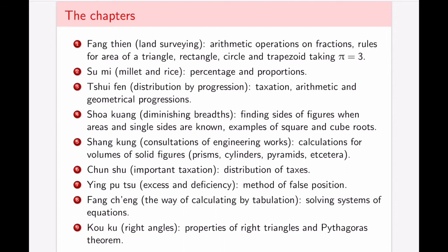So we already see some very deep mathematics being developed here. The next one, consultation of engineering works, solid figures in their volumes, important taxation, so general distribution of taxes. Chapter seven contains method of false position that was not actually found in Europe until the 13th century. So almost like a millennia later. And in chapter eight, where we have solving systems of equations, this contains methods that are identical to Gaussian elimination method. Now, this is much before Gauss that lived in 1700s, born in 1777.